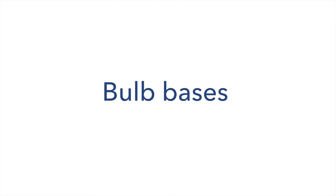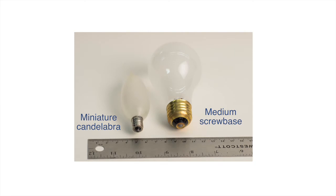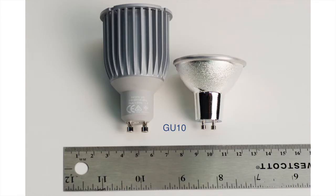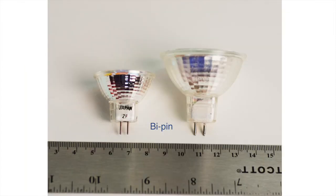Check that the bulb you're buying has the right base for the socket it will go into. The most common base in homes is the medium screw base. The miniature candelabra base is used in chandeliers. The GU10 base is used on MR16s and some other accent lights, and is usually connected to line voltage. The BiPin base is found on MR16s connected to low voltage.